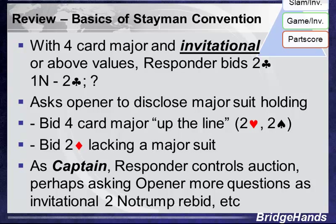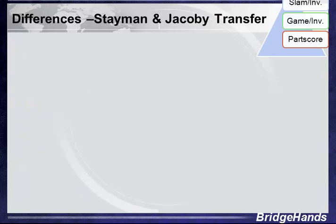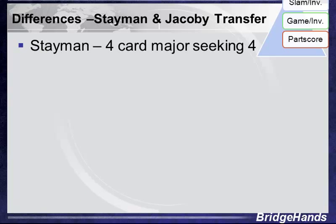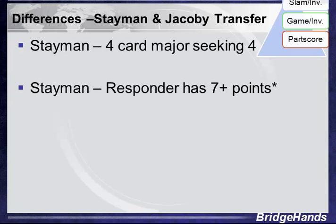As captain, the responder then controls the auction — perhaps inviting game by bidding two no trump, signing off in three no trump, or looking for slam. The key differences: Stayman involves a four-card major by responder seeking a four-card major from opener, and responder normally has seven or more points. There's an exception for those playing garbage Stayman, but the basic Stayman requires invitational values.